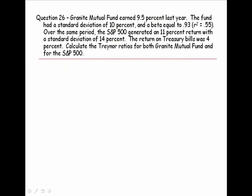Here's the same problem, but this time we're asked to solve for the Treynor ratio. Granite Mutual Fund earned 9.5% last year. It had a standard deviation of 10% and a beta equal to 0.93. Notice the R-squared is 0.55. Over the same time period, the S&P 500 generated an 11% return with a standard deviation of 14%. The return on Treasury bills was 4%. Calculate the Treynor ratio for both the Granite Mutual Fund and for the S&P 500.